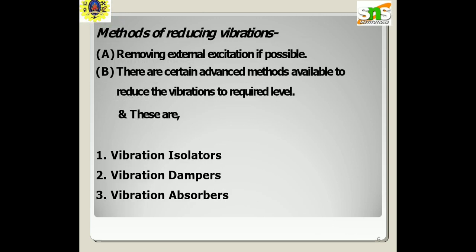The methods of reducing vibration: where removing the external excitation is possible, there are certain advanced methods available to reduce vibrations to a required level. These are: first, vibration isolators; second, vibration dampers; and third, vibration absorbers.